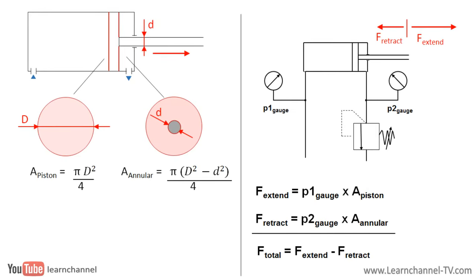This piston force can be calculated by the law of Pascal. If you have pressure on both sides, the effective piston force is the difference of the forces on the piston and rod side.